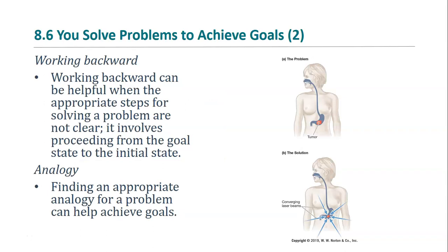Another strategy is to work backward. Consider this problem: water lilies double in area every 24 hours. On the first day of summer there is only one water lily on the lake, and it takes 60 days for the lake to be completely covered. How many days does it take for half the lake to be covered? Working backwards, the problem is incredibly easy — since the water lilies double every day and the lake is covered on day 60, it was half covered on day 59.